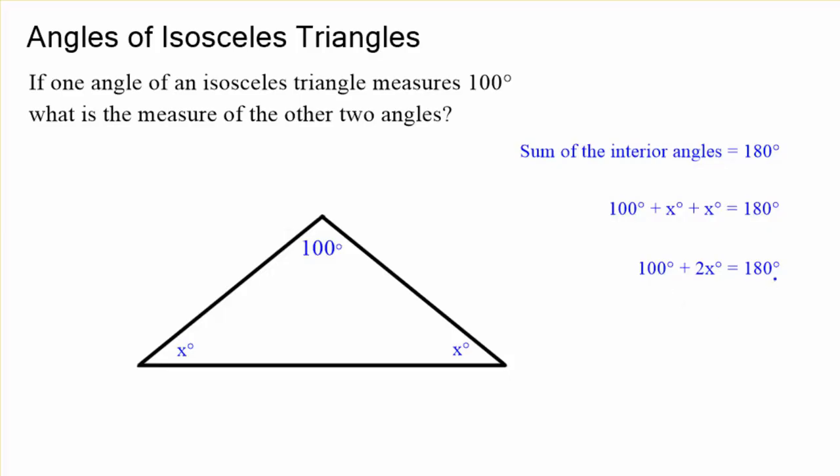And now we solve. Start moving things around. Subtract 100 from both sides. 2x equals just 80. Divide both sides by 2. And finally, your x will equal 40 degrees.